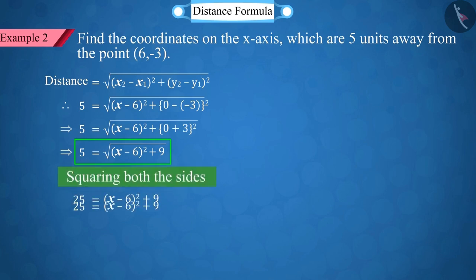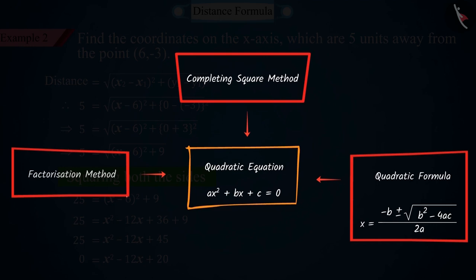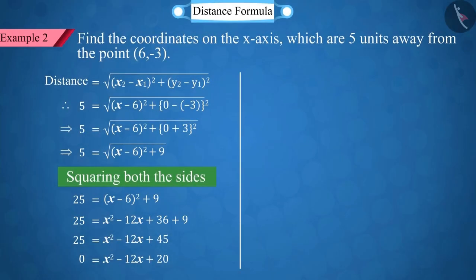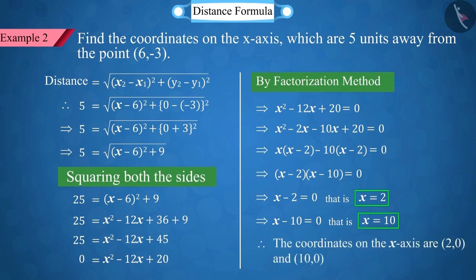Squaring both sides of this equation, we get a quadratic equation. You must remember that we have already studied many methods of solving quadratic equations. Here, we solve the quadratic equation by the method of splitting the middle term, from which we get two values of x, that is, x is equal to 2 and 10. So, we can say that there are two coordinates, (2, 0) and (10, 0), located on the x-axis.